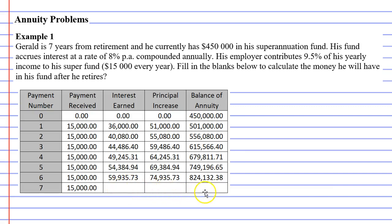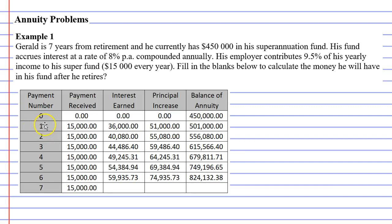Before we fill in these three blanks, we need to understand what's going on in this table here. You'll notice on the left we have our payment numbers. When we talk about payment number zero, this represents the beginning. At the beginning, we are told that Gerald has $450,000 in his superannuation fund, which we can see over here on the right as the balance of Gerald's annuity. When we go to the second row, we come to payment number one, which represents the payment at the end of the first year.